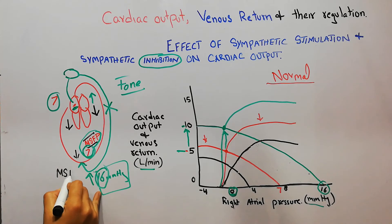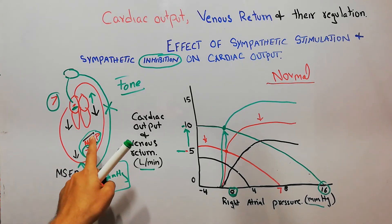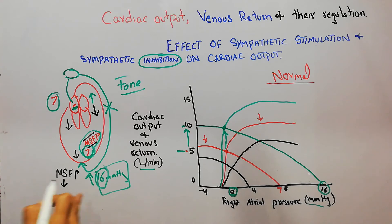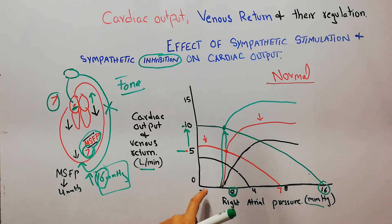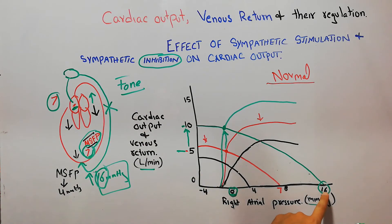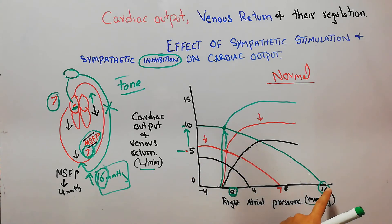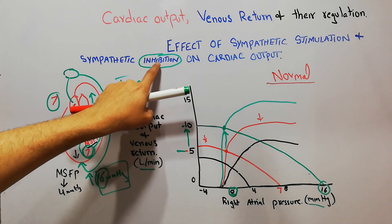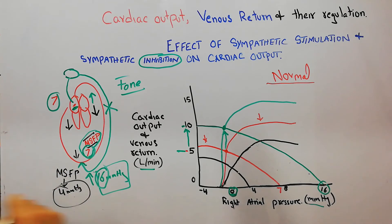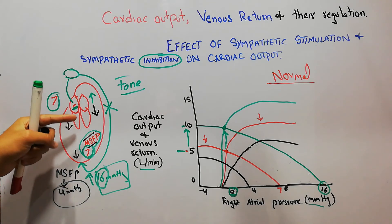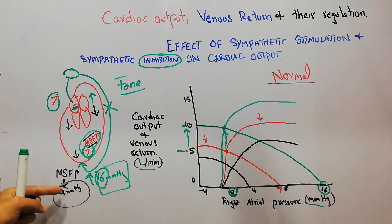When sympathetic stimulation of peripheral vessels decreases, the mean systemic filling pressure — the pressure helping to move blood toward the heart — also falls to a lower level, for example to 4 mmHg. In normal conditions it was 7 mmHg, and with sympathetic stimulation it became 16 mmHg. With inhibition, even the sympathetic tone is blocked, so heart rate decreases, pumping power decreases, and mean systemic filling pressure also decreases.